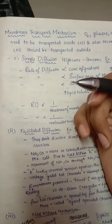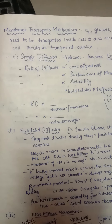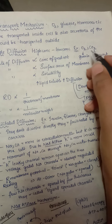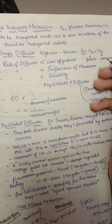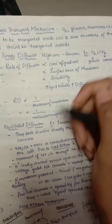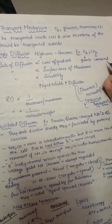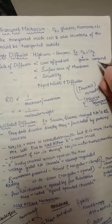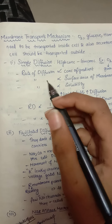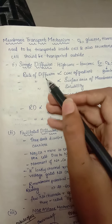First, we have simple diffusion. This doesn't require any energy because it transmits from higher concentration to lower concentration. For example, oxygen goes inside the cell and carbon dioxide comes out of the cell without any energy — from high concentration to low concentration. The rate of diffusion is directly proportional to the concentration gradient.